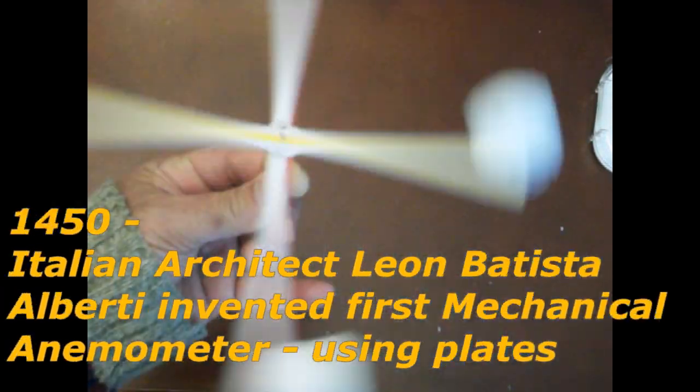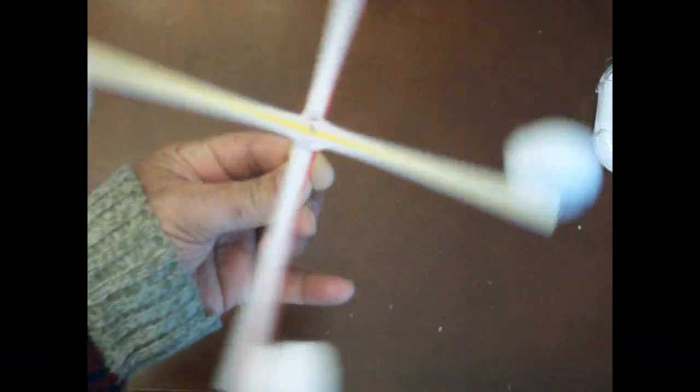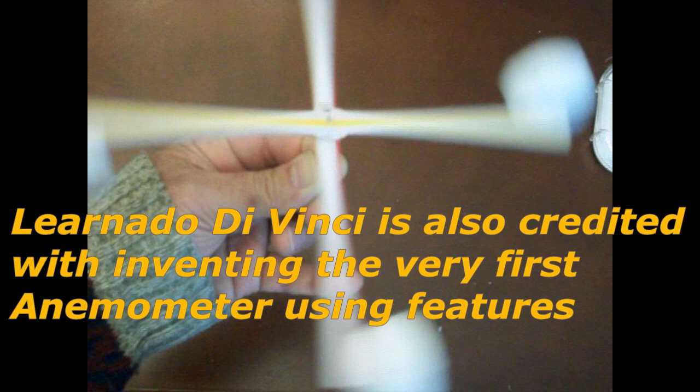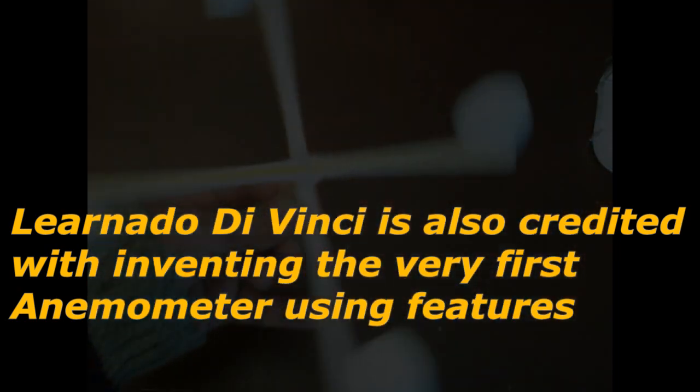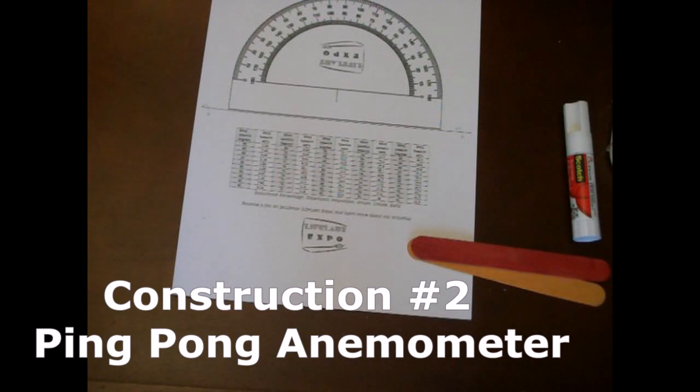That would give us the rotations per minute, and knowing the diameter - that is the length of the straw - and the number of rotations will give us the speed. On to the second construction, that's the ping pong ball.